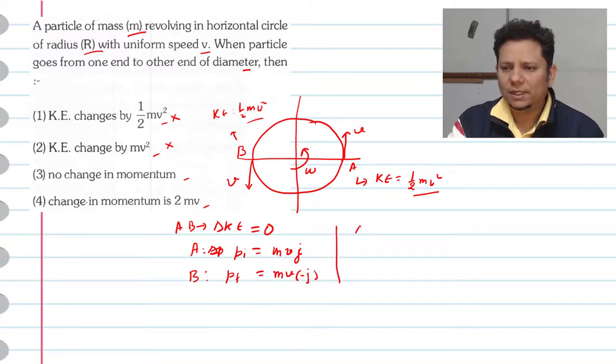Now change in momentum, delta p, that is final momentum minus initial momentum. The value will be, final momentum is minus mv j, minus mv j.